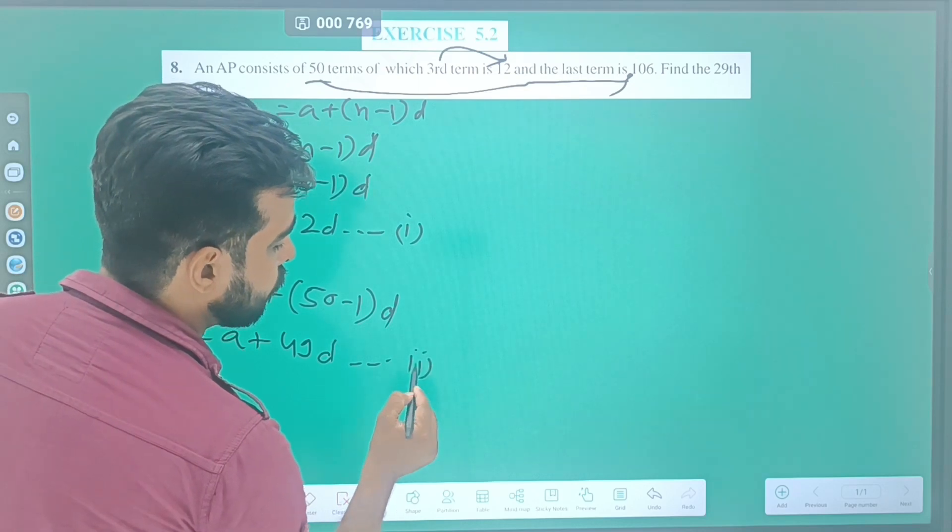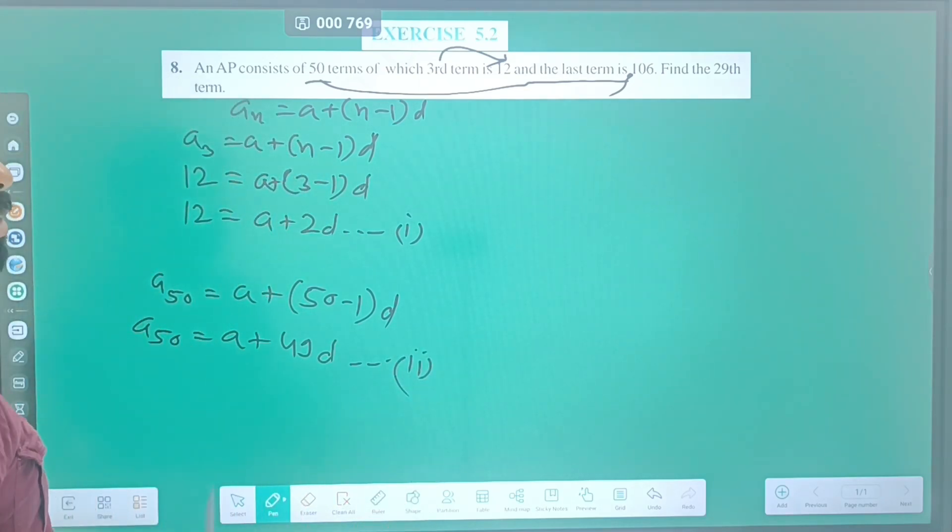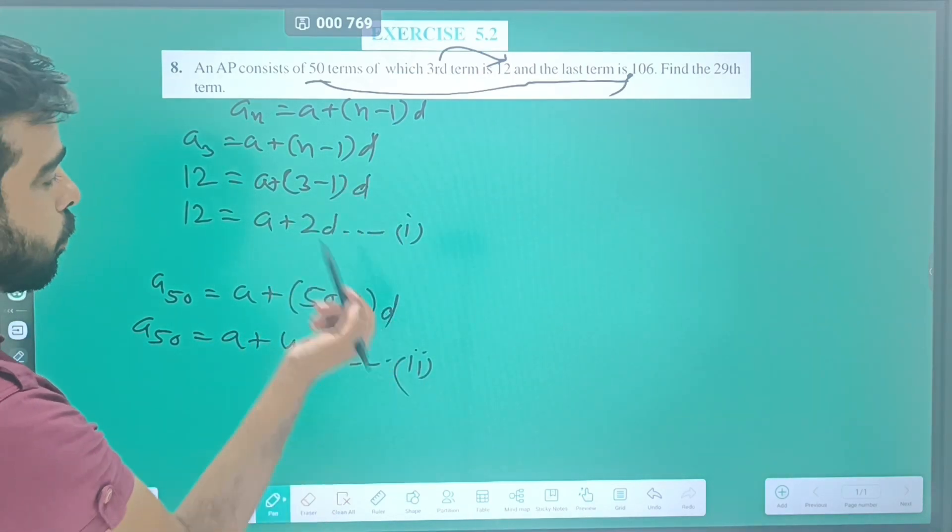We have to find the value of two variables a and d, and we have two equations. Now we can put the value of a from equation 1 into equation 2.